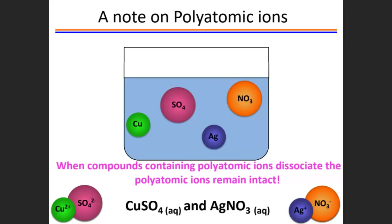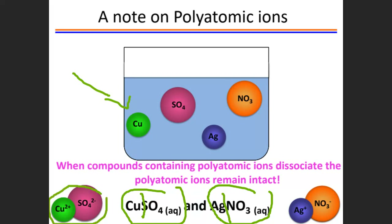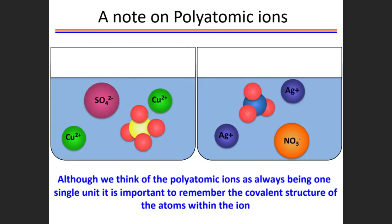Let's see some examples of polyatomic ions. Similar to single ions, polyatomic ions like copper sulfate and silver nitrate are salts. When they ionize in water, they also dissociate: silver ion and sulfate ion. Although we think polyatomic ions are always one single unit, sometimes we have multiple valency. Most of the time they dissociate, but they can also remain intact.